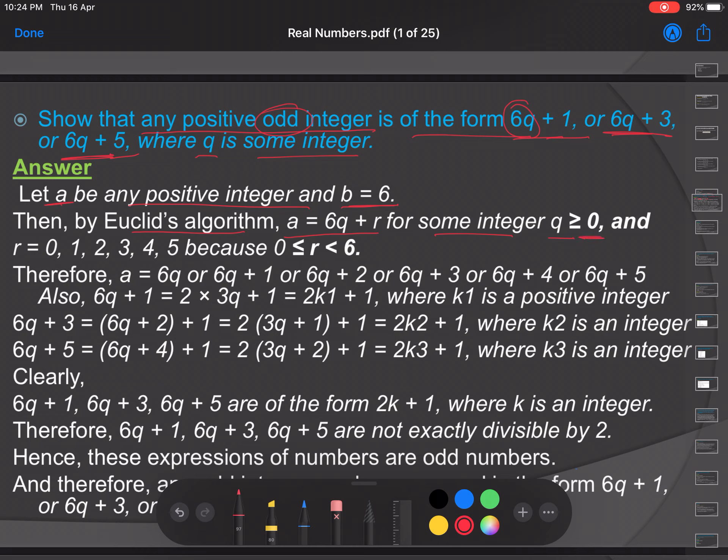And r, the possible value of remainder, can be 0, 1, 2, 3, 4, and 5 because the remainder is always greater than or equal to 0 but less than 6.